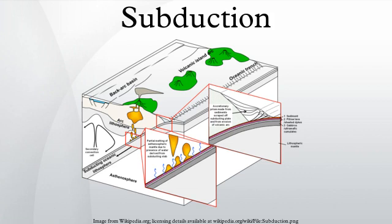Flat slab subduction occurs when subducting lithosphere, called a slab, subducts horizontally or nearly horizontally.